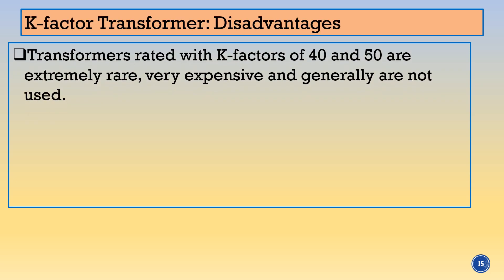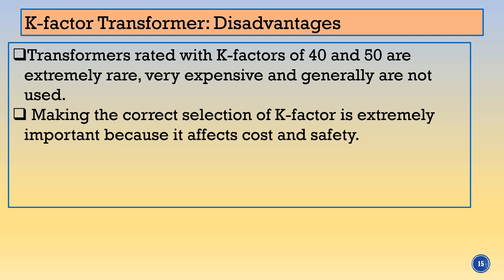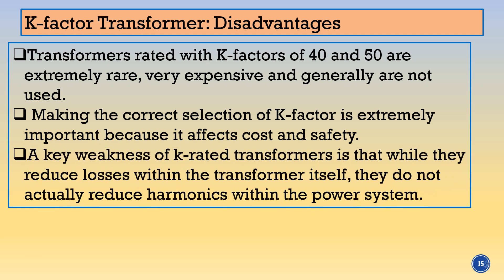What are K factor transformers? K rated transformers prevent overheating of the transformer by accommodating increased stray losses associated with the K factor. They prevent neutral overheating by oversizing it at 200%, which is more economical than using the D rated approach and is more efficient. A key weakness of the K rated transformer is that while it reduces losses in the transformer itself, it does not reduce the harmonics — the harmonic current remains as it is in the transformer.